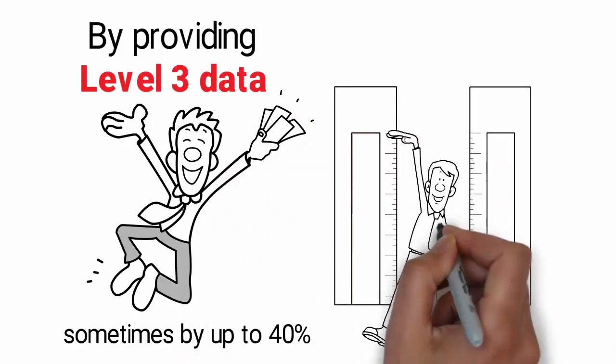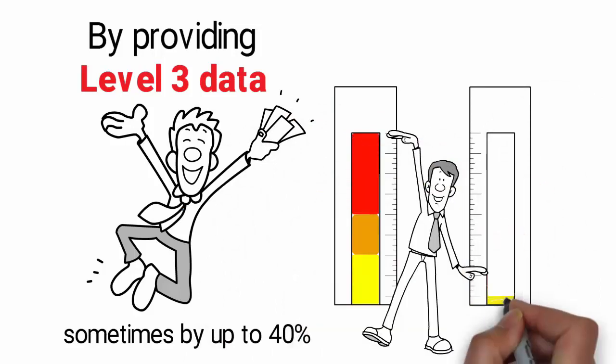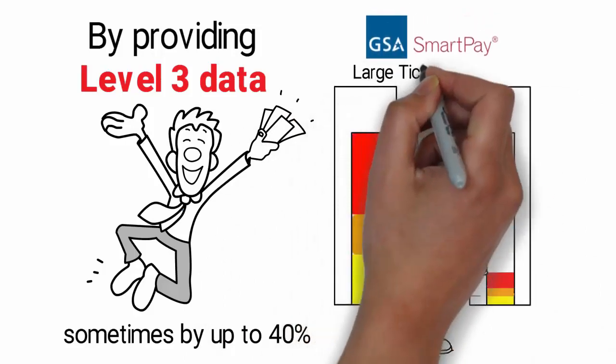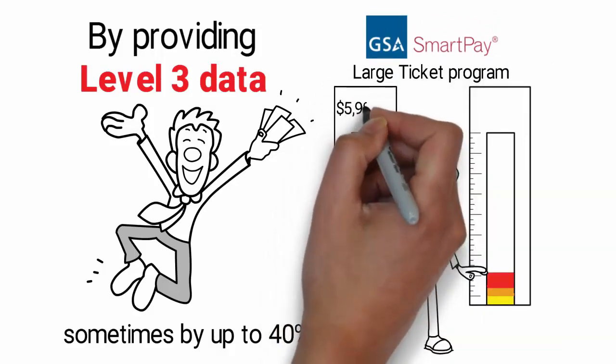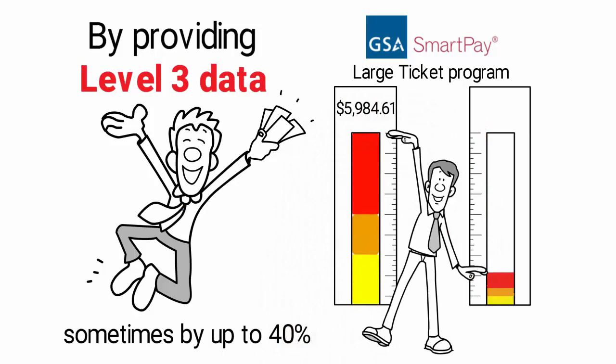However, savings can be further increased for contractors by enrolling in the special GSA SmartPay large-ticket program. This qualifies your transactions of $5,984.61 and above at 1.2%.